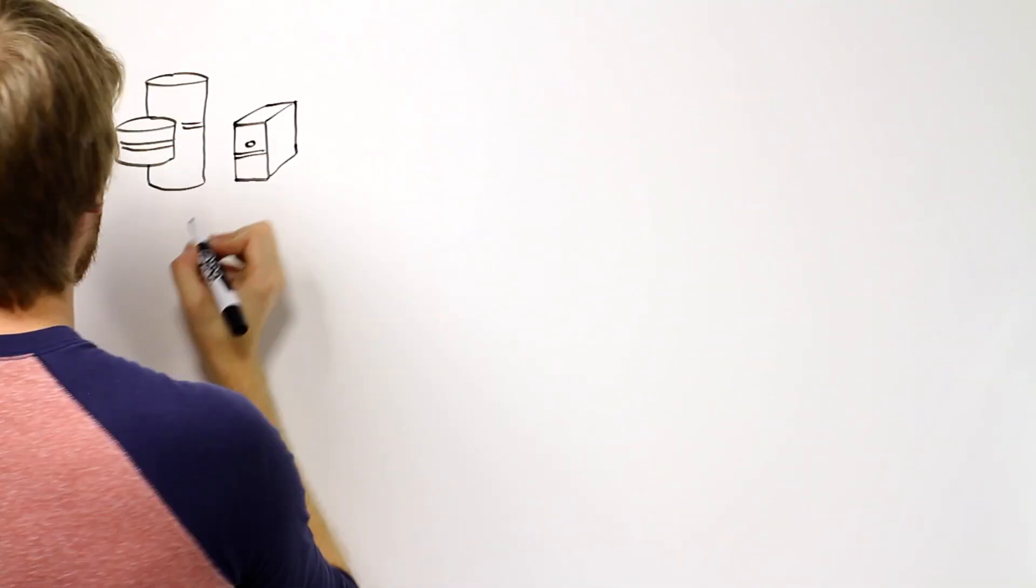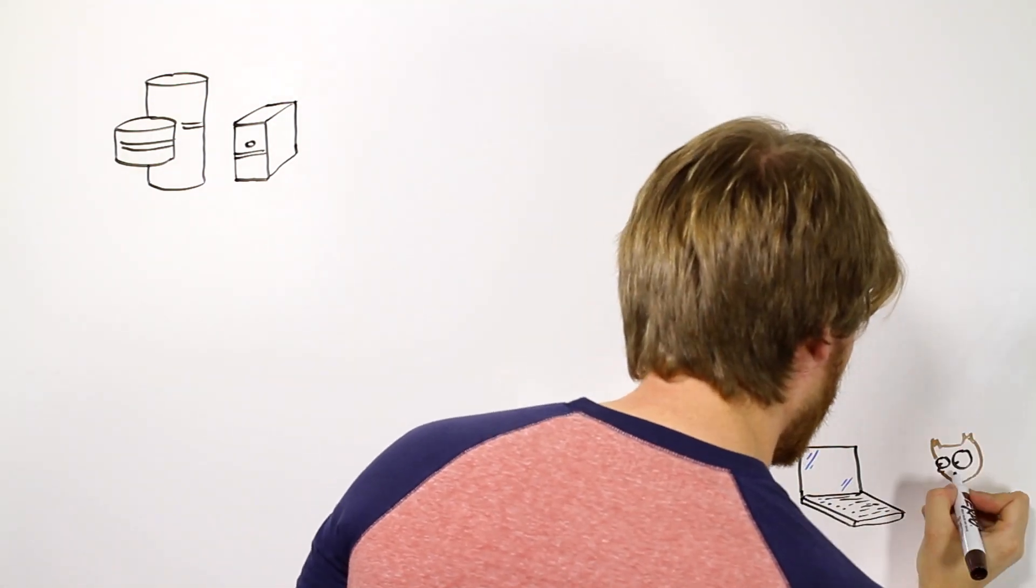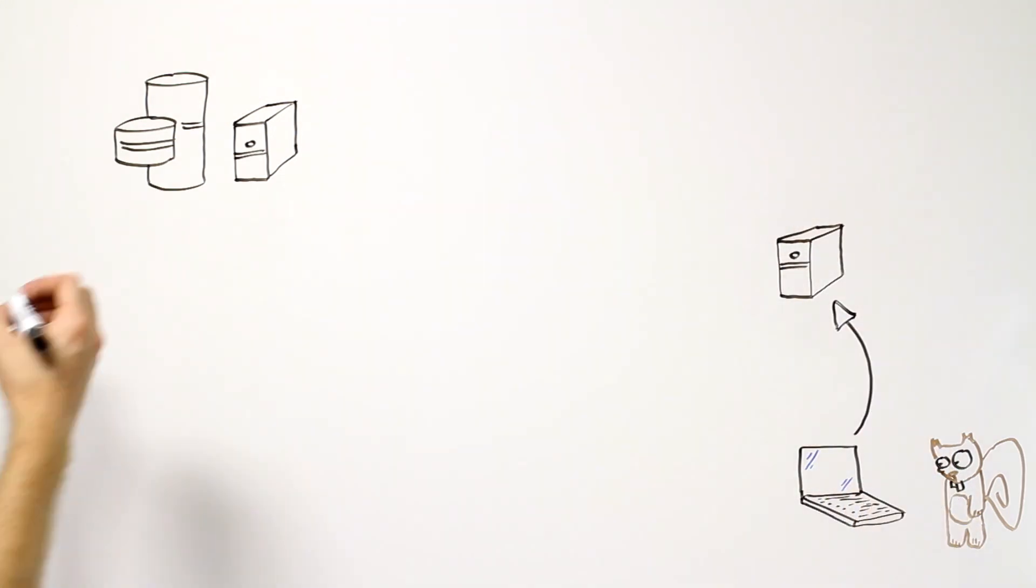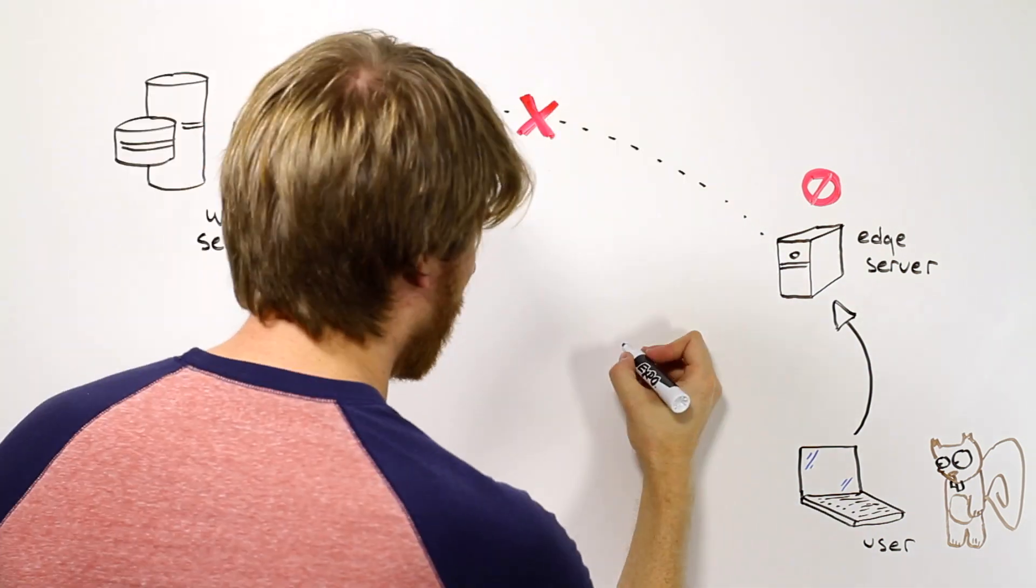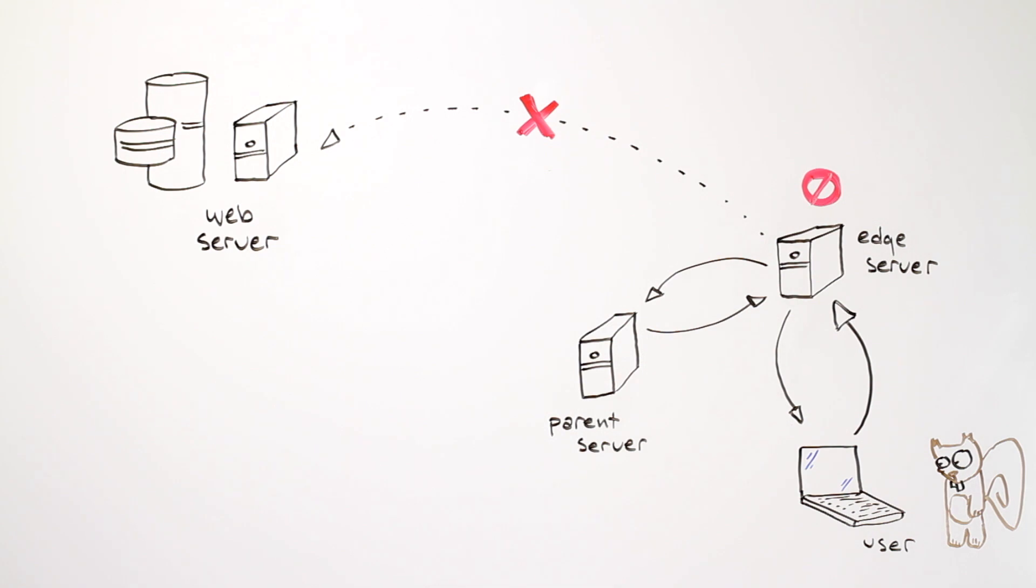The first thing I want to introduce is the concept of tiered caching. One of the main benefits of caching is the ability to offload requests from your web server by responding on its behalf to those requests with our edge servers. However, sometimes a requested file isn't cached on an edge server. Instead of forwarding that request all the way back to your web server, we can request the file from a second tier of cache, a location we call the parent server.